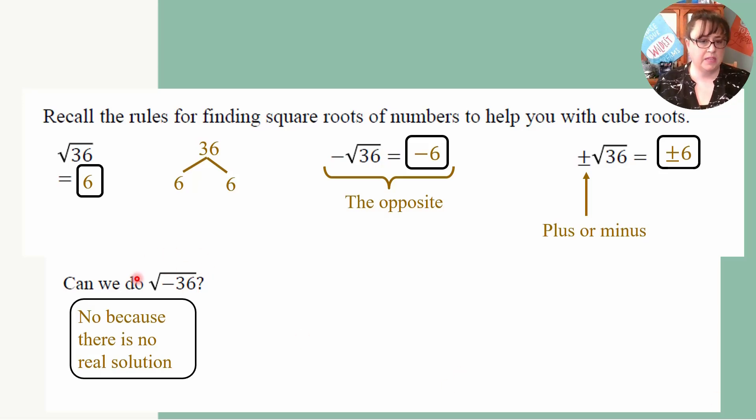So now this gets us back to this question. Can we do the square root of negative 36? And the answer is no, because there's no real solution. And why is there no real solution? Well, that's because we have to remember that when we are doing squares, taking negative 6 squared is negative 6 times negative 6, which is 36. And 6 squared is 6 times 6, which is 36. And squares and square roots, those are inverses of each other. So there's no way for me to get negative 36 when I multiply the same number times itself.